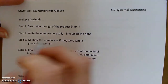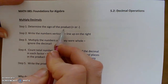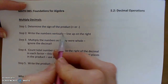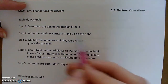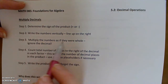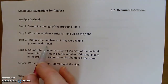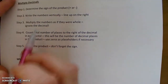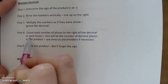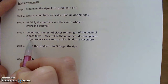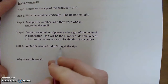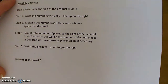Here's our procedure. First, you'll determine the sign of the product — either positive or negative. Then we'll write the numbers vertically, lining everything up to the right, completely ignoring the decimal point. Step 3, we'll multiply the numbers as normal, ignoring the decimal. At the end, we'll count the total number of places to the right of the decimal in each factor — that'll be the total number of places in the product. Step 5 is to write down your answer, and don't forget to write the sign.